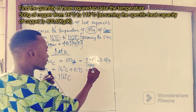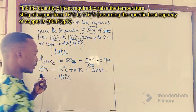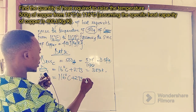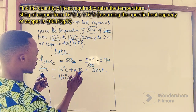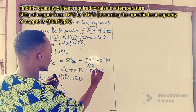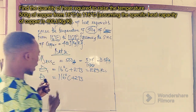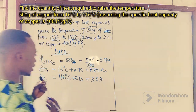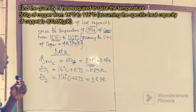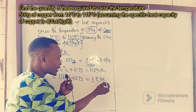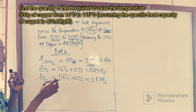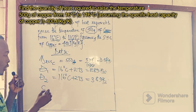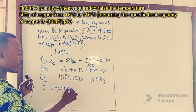Adding 273 to 16 gives us 289 Kelvin for the first temperature. And adding 273 to 116 gives us 389 Kelvin for the second temperature. Having converted both temperatures to Kelvin, we write the remaining data: the specific heat capacity of copper C is equal to 400 joules per kilogram per Kelvin.